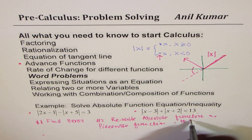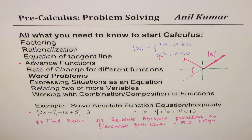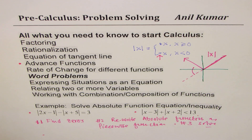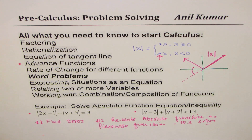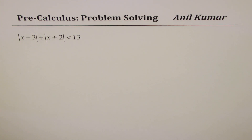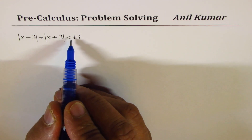After rewriting as a piecewise function, you then solve. That is what you need to follow to solve equations or inequalities based on absolute functions. To make it more interesting, I have taken two absolute functions. You can search for 'Anil Kumar absolute function equations' for more examples. The first example here is the inequality: |x − 3| + |x + 2| < 13.